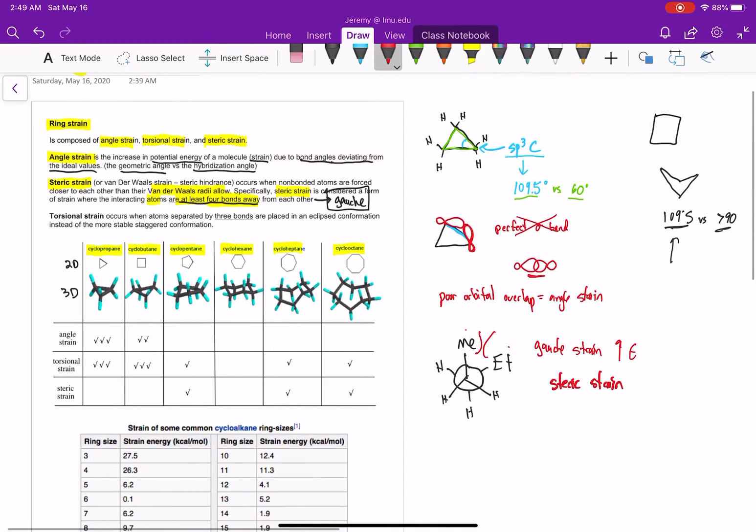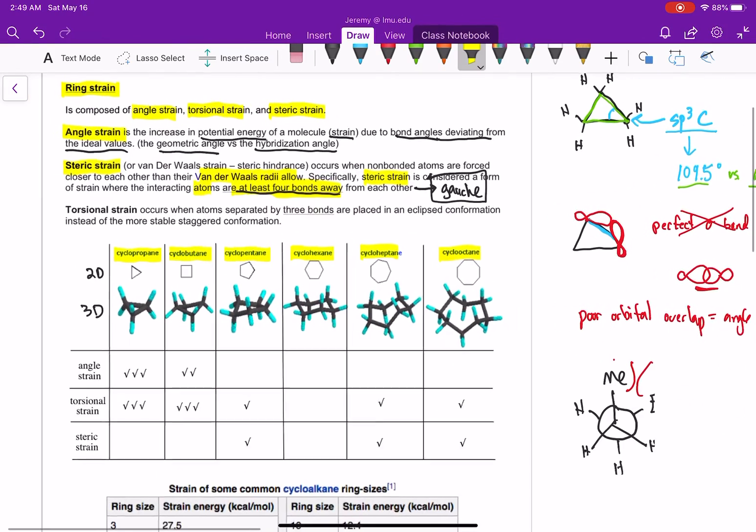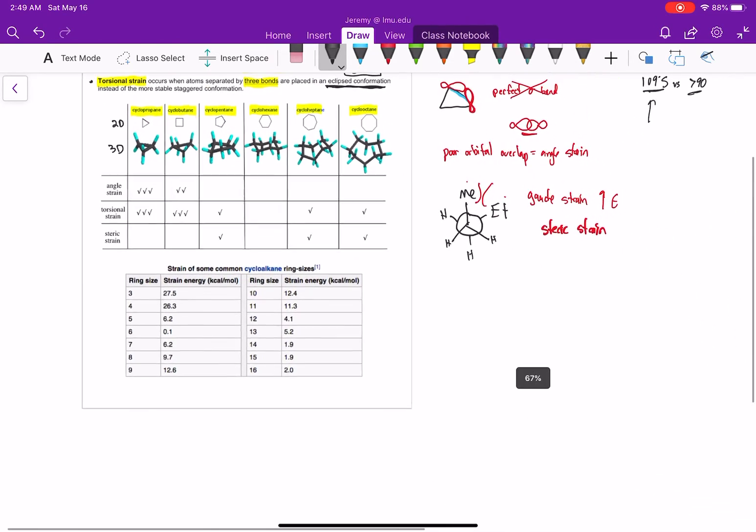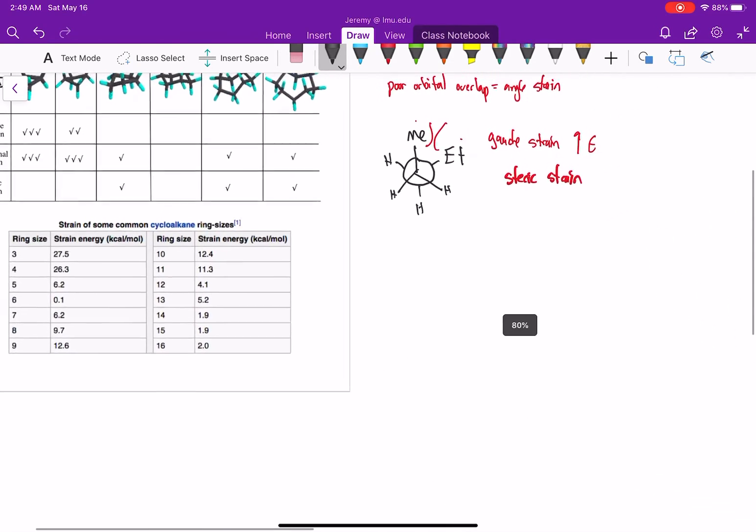Let's look at our third type of strain. Our third type of strain is called torsional strain. That occurs when atoms are separated by three bonds, and they're placed in an eclipsed conformation. And again, we just saw this when we were talking about Newman projections. So anytime you're forced into an example where the hydrogens are eclipsed, that's called torsional strain.